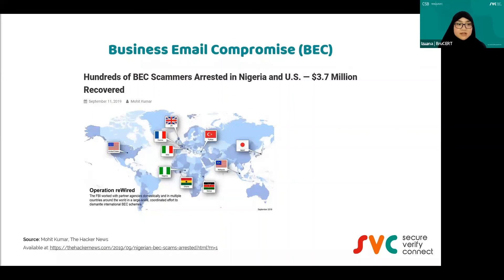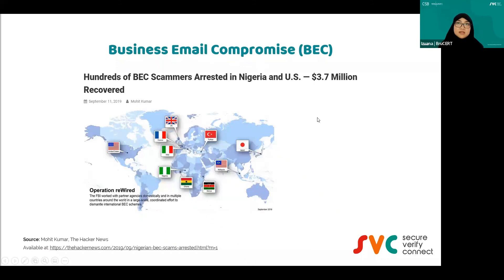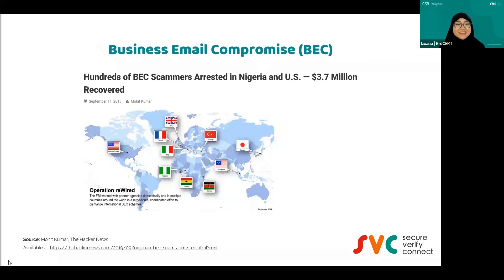Hundreds of BEC scammers have been arrested, mostly from Nigeria and the US, but only $3.7 million was recovered — which is not a lot given the scale of losses.